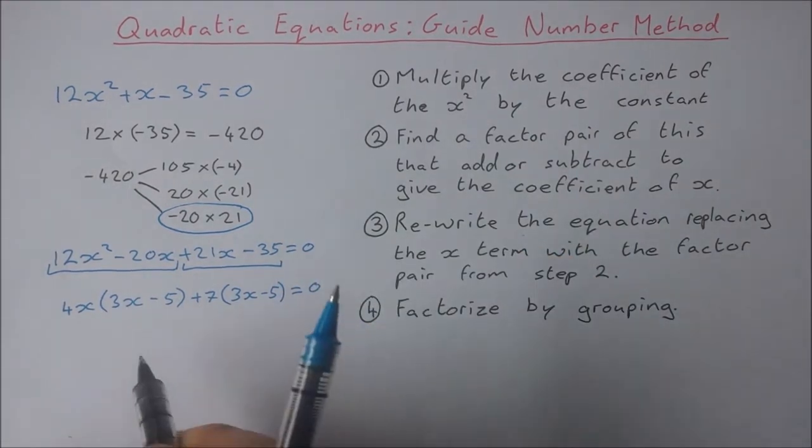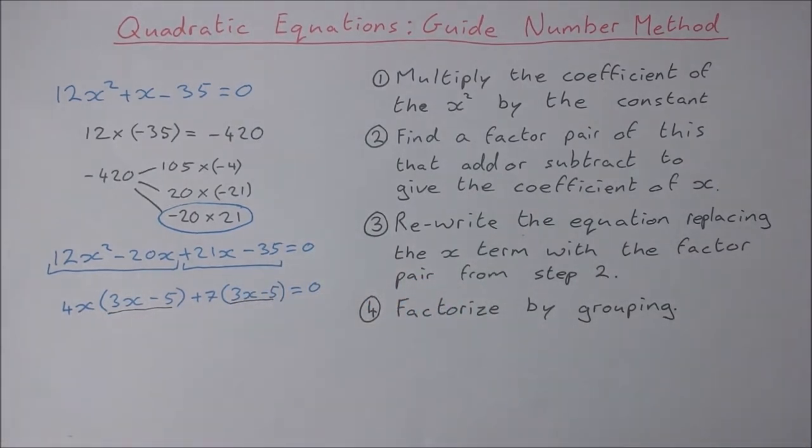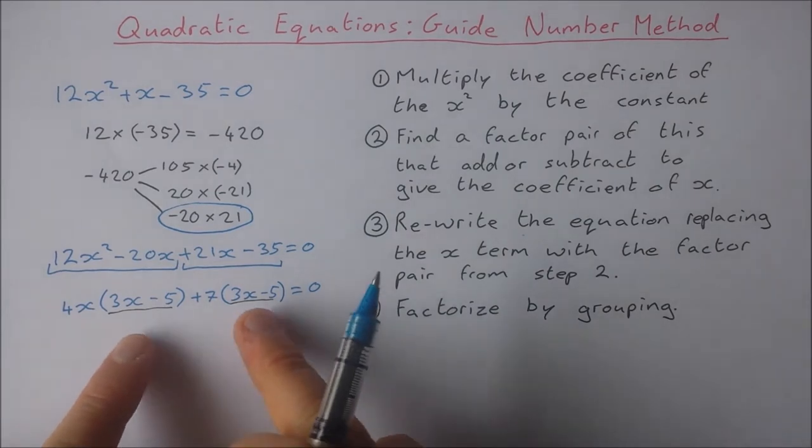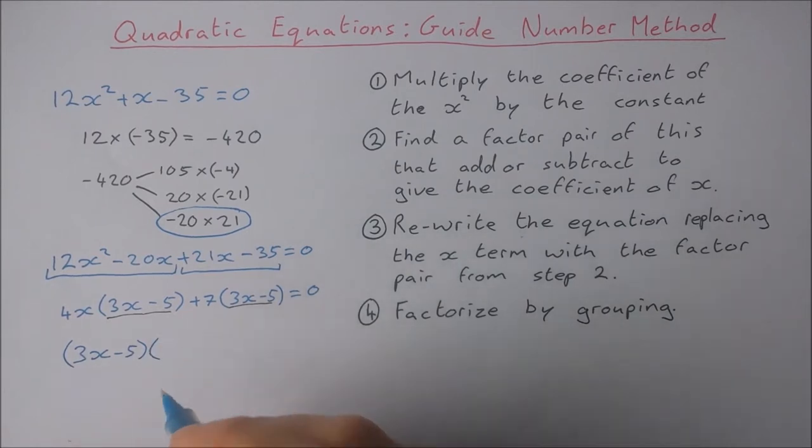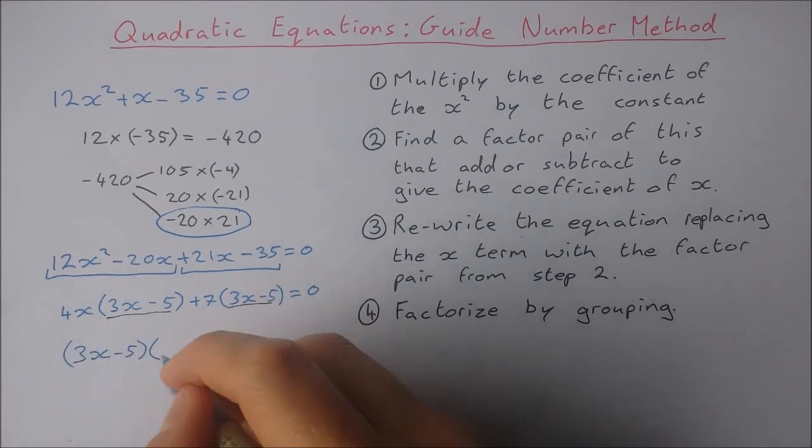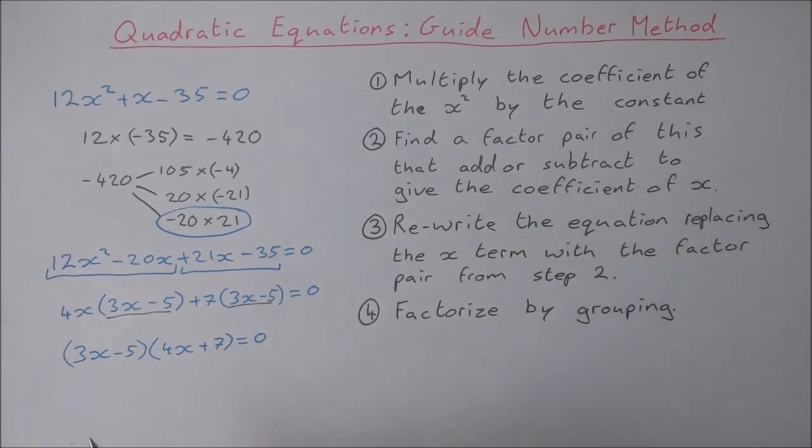Now factorizing by grouping, we're always aiming to have the same thing inside each brackets, so then I can factorize these two out again to have (3x - 5)(4x + 7) equal to 0. So there I have factorized my quadratic trinomial: (3x - 5)(4x + 7).